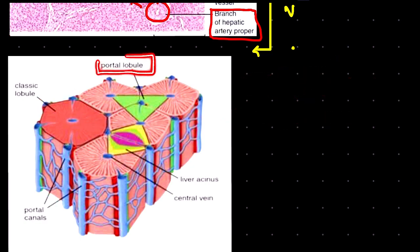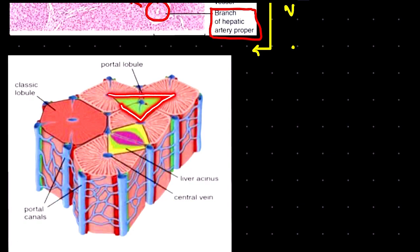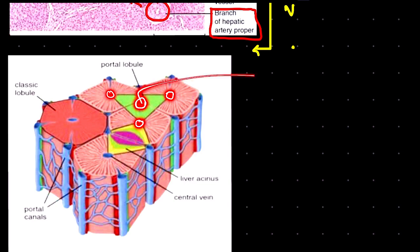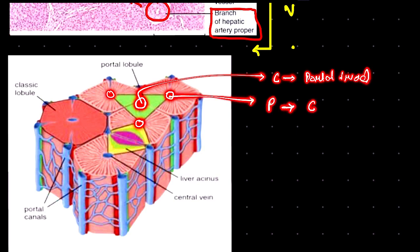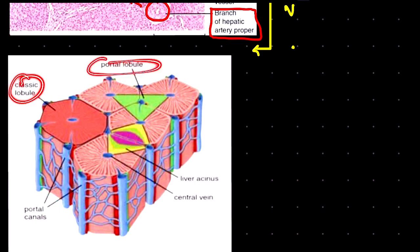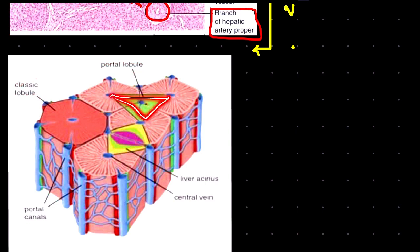The portal lobule is based on bile drainage. In this concept, the portal triad is at the center, and three central veins are at the periphery. The shape of the portal lobule is triangular.